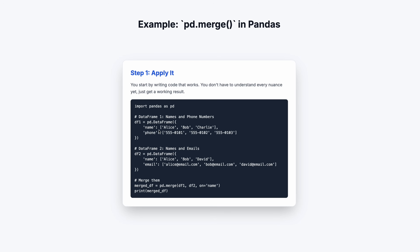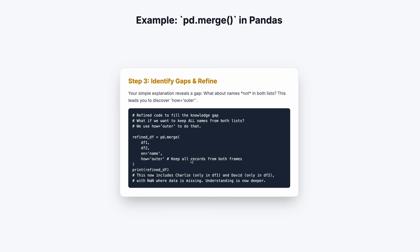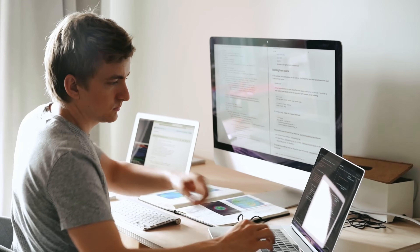For example, you might write something like: 'Merge is like having two lists — one has names and phone numbers, the other has names and email addresses. The merge looks at the names on both lists and combines them so now you have one big list with names, emails, and phone numbers all together.' Third, identify the gaps — if you hit a wall while explaining, that's a knowledge gap. Go back to the documentation or look it up online, then repeat the process. This moves you away from just copy-pasting code and develops a deep, lasting understanding.